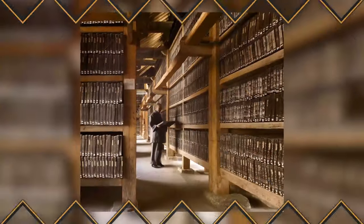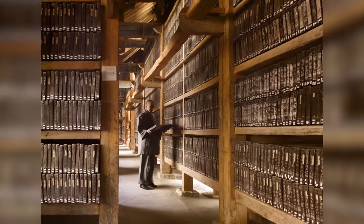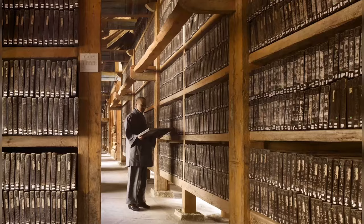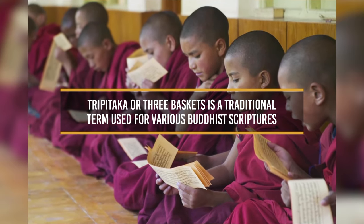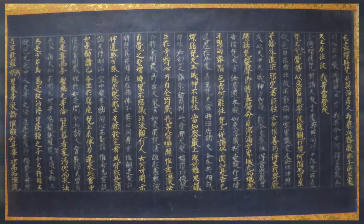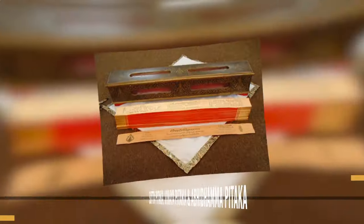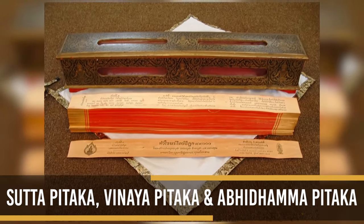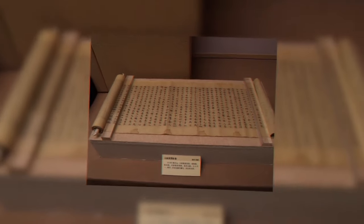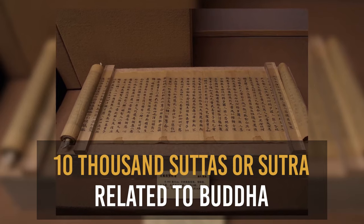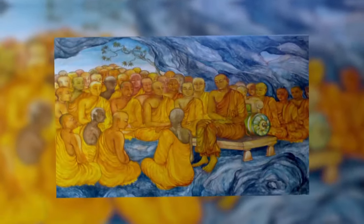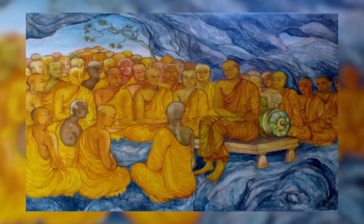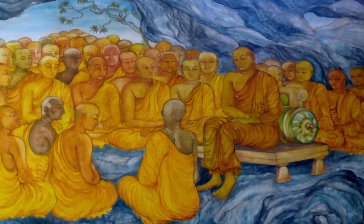From the initial days, Buddhist literature has grown. We are going to see some of the Buddhist literature books now. 1. Tripitaka — Tripitaka or Three Baskets is a traditional term used for various Buddhist scriptures. It is known as Pali Canon in English. The three Pitakas are Sutta Pitaka, Vinaya Pitaka and Abhidhamma Pitaka. It contains over 10,000 sutras related to Buddha and his close companions. This also deals with the first Buddhist council which was held shortly after Buddha's death, dated by a majority of recent scholars around 400 BC.